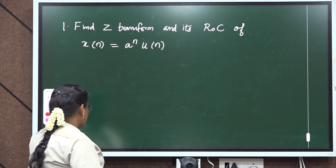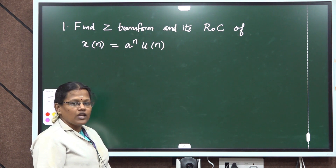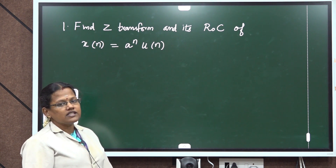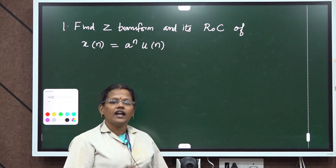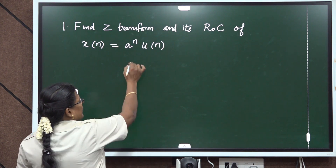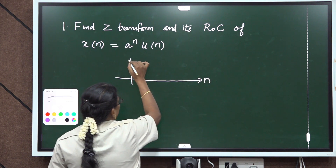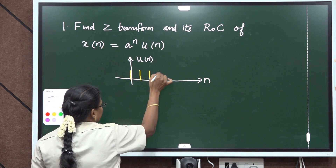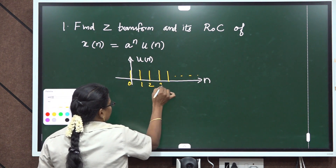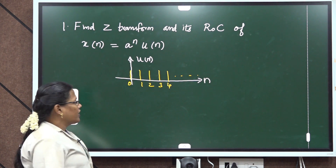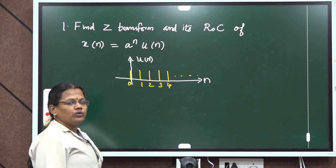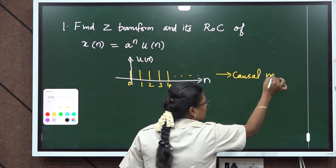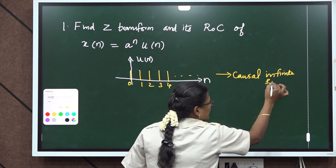Now we do the problem of Z-transform and its ROC. Find the Z-transform and ROC of x(n) equal to a power n times u(n). We all know that u(n) is an infinite causal sequence — causal means it has values only on the right-hand side. Let me draw u(n) for your reference: it has values only at n equal to 0, 1, 2, 3, 4, etcetera up to infinity. In the negative side, there are no values. This is called a causal as well as infinite sequence.